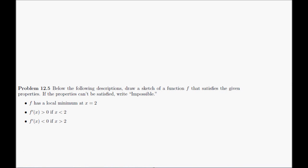Sketch a function so that f has a local minimum at x equals 2, f prime of x is greater than 0 if x is less than 2, f prime of x is less than 0 if x is greater than 2. Now, it's important to know that this can be done for this problem as stated.